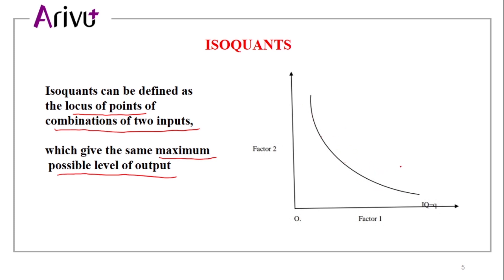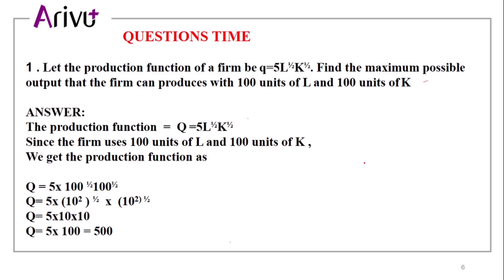Now it's question time. First question: Let the production function of a firm be q equal to 5L raised to 1 by 2 multiplied by K raised to 1 by 2. Find the maximum possible output that the firm can produce with 100 units of labor and 100 units of capital.